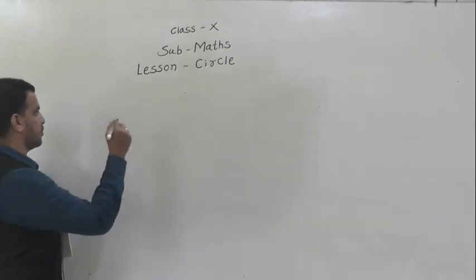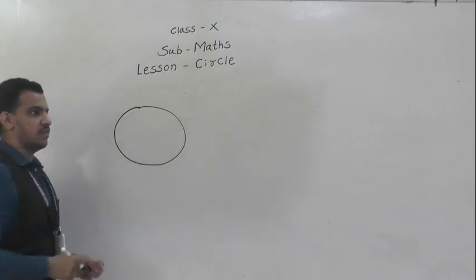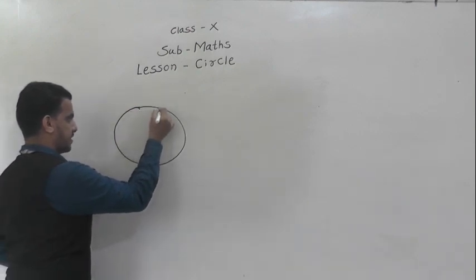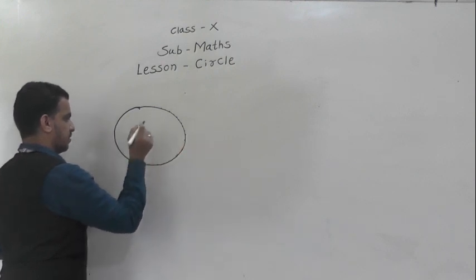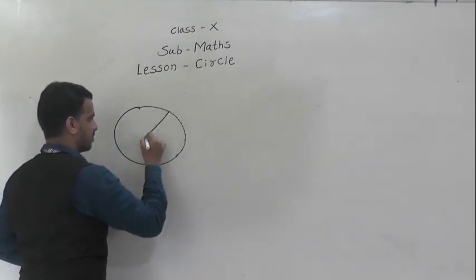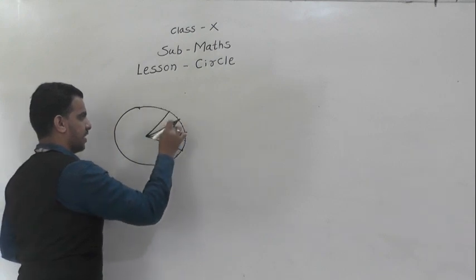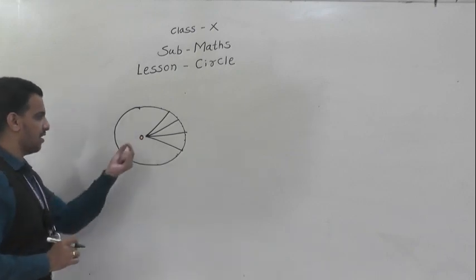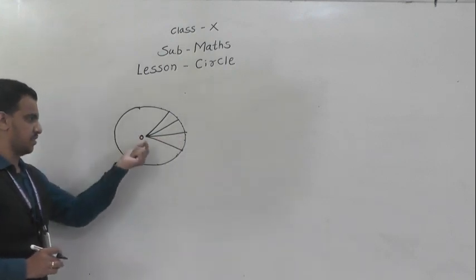So first, what is the definition of circle? A circle is a collection of all points in a plane which are at a fixed distance from a fixed point. These all points are situated at a fixed distance from a fixed point. This fixed point we call the center of the circle, and this fixed distance we call the radius of the circle.